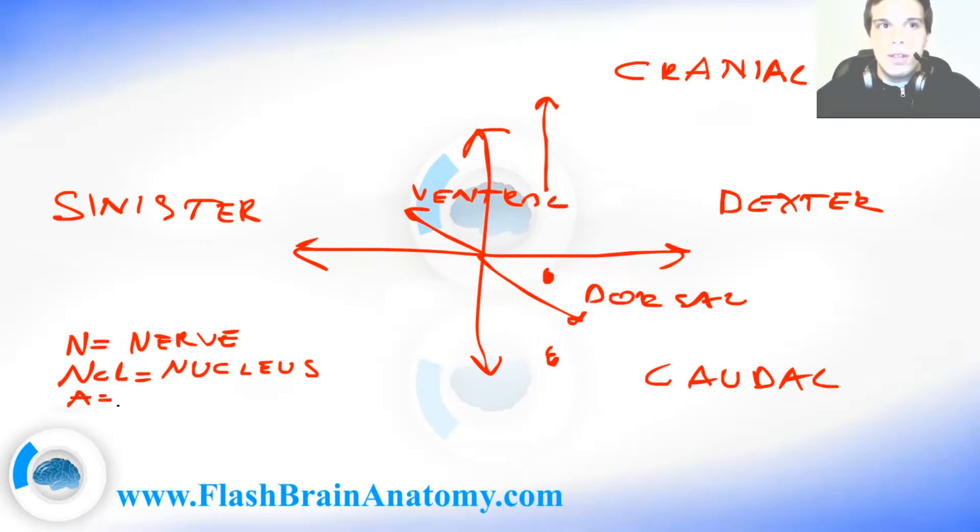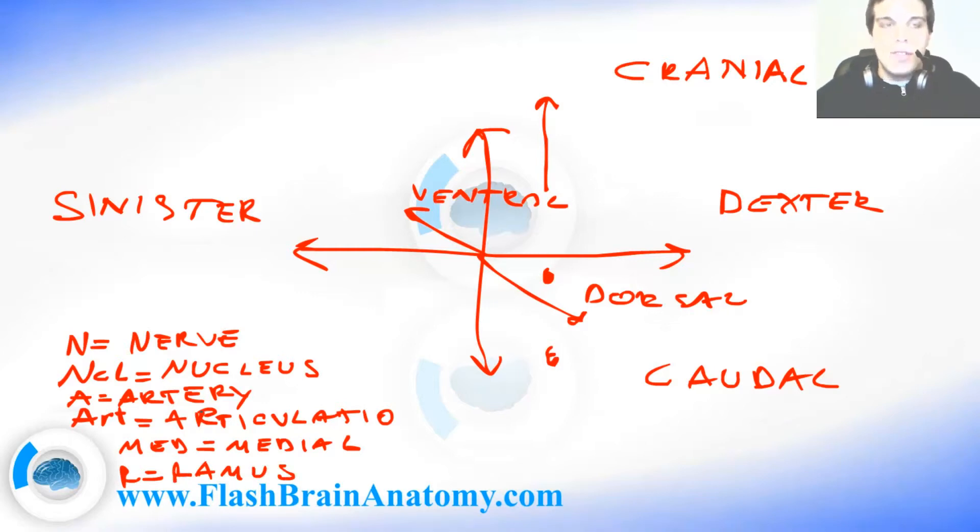Also, A stands for artery and ART stands for articulatio. MED stands for medial, and not medius or medullaris. And one more thing, R stands for ramus, which means a branch. It doesn't stand for root. It's very often confused with root.